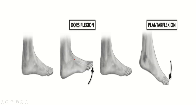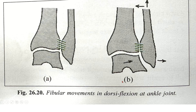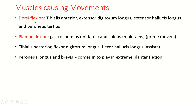In dorsiflexion, the lower end of fibula moves laterally and the upper end slides upwards. Muscles causing dorsiflexion are tibialis anterior, extensor digitorum longus, extensor hallucis longus, and peroneus tertius. For plantarflexion, the main movers are gastrocnemius and soleus — gastrocnemius initiates and soleus maintains it. Tibialis posterior, flexor digitorum longus, and flexor hallucis longus assist this movement. Peroneus longus and brevis come into play in extreme plantarflexion.